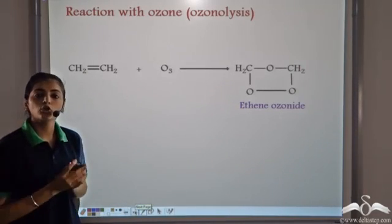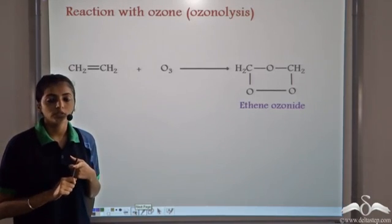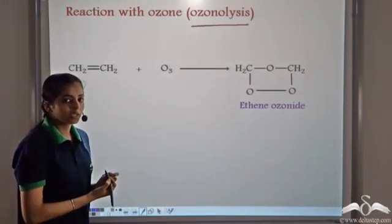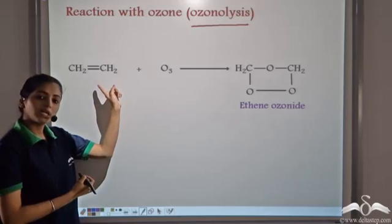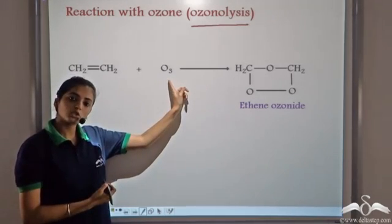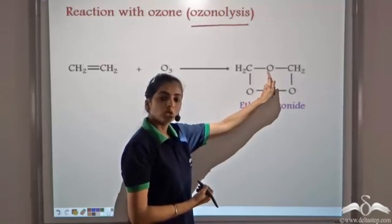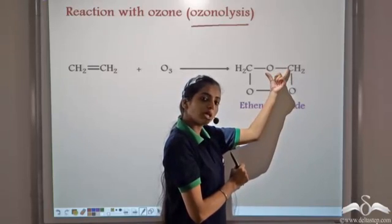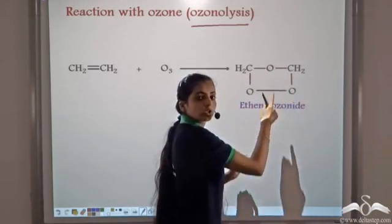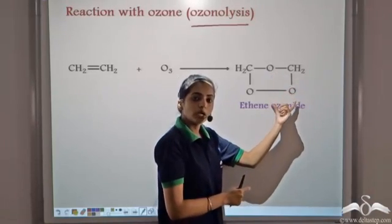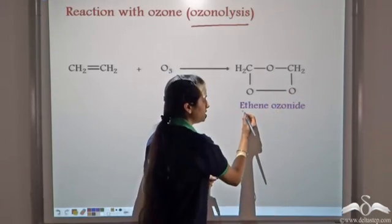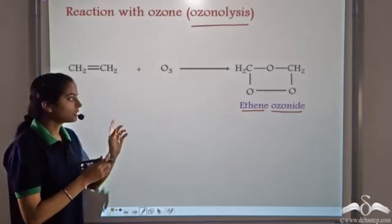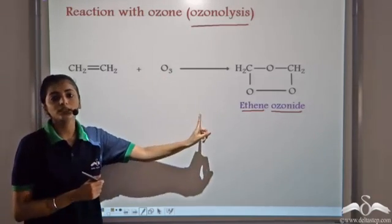Another very important reaction of alkenes is the reaction with ozone. The reaction of an alkene with ozone is known as an ozonolysis reaction. This is a very special reaction. We have ethene made to react with ozone: one oxygen atom goes between the two carbon atoms, and the other two oxygen atoms attach to each of the carbon atoms. The product obtained by the reaction of ethene with ozone is known as ethene ozonide.